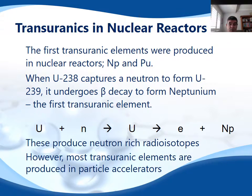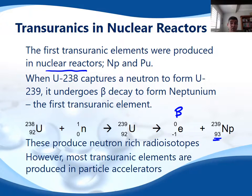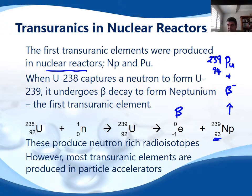The first transuranic elements were produced in nuclear reactors through the addition of a neutron to a uranium atom — in this case uranium-238. This produced an unstable form, uranium-239, which underwent beta decay to form neptunium, element 93, the next one above uranium. Neptunium also undergoes beta decay, producing another beta particle, which allows us to produce the next element, plutonium-239. The beta decay notation is 0,-1 and this is how the first transuranic elements were produced.